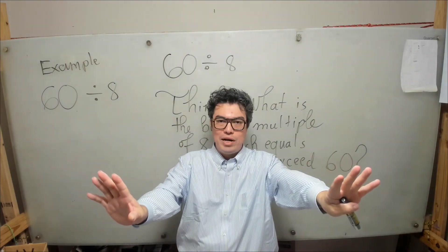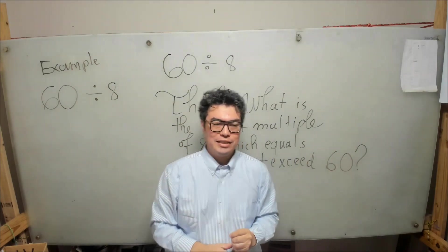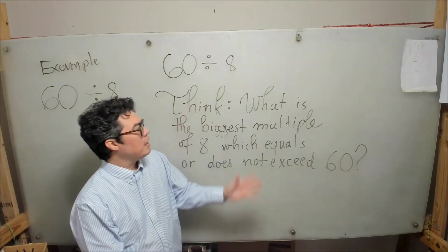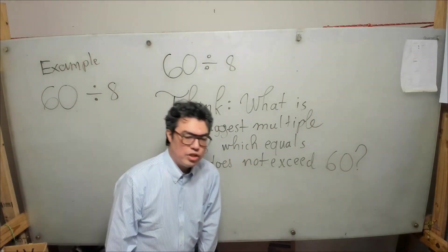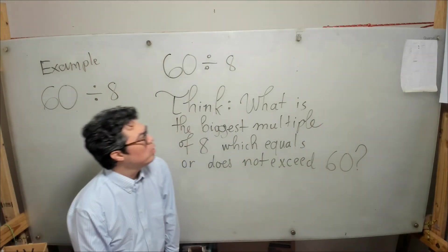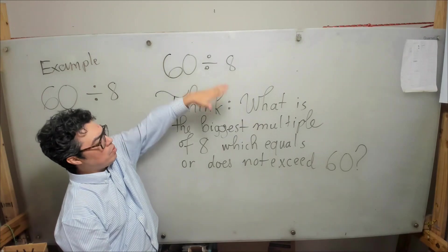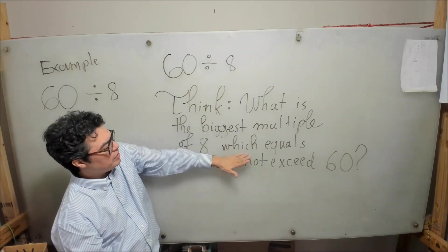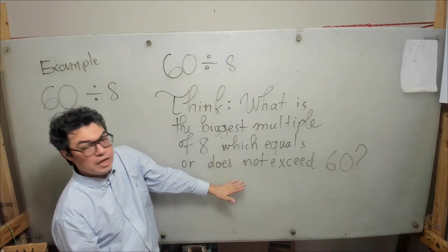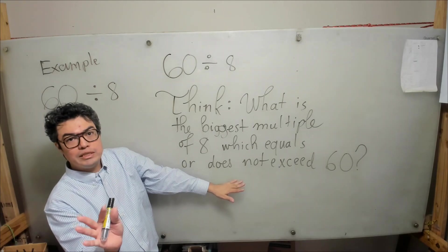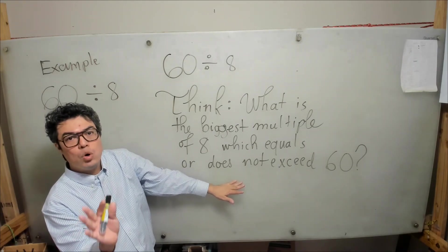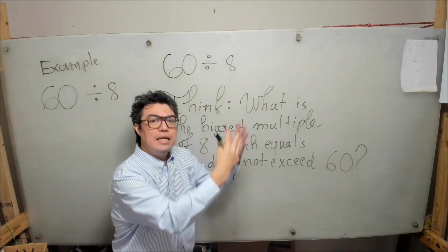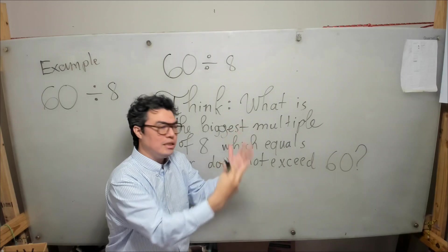Okay, let's get straight to the point. We want to do 60 divided by 8 and we want to find out what is the biggest multiple of 8 which either equals 60 or which at least does not exceed — is not bigger than — 60.